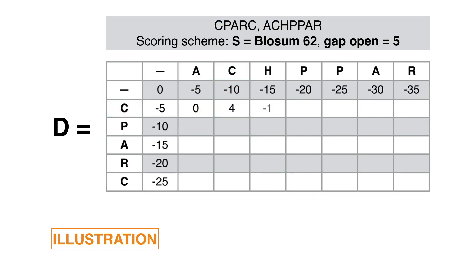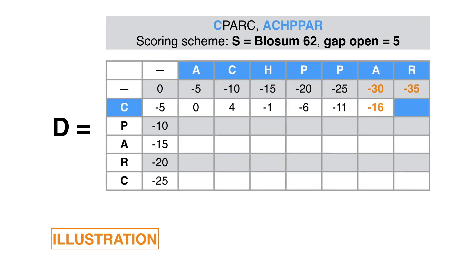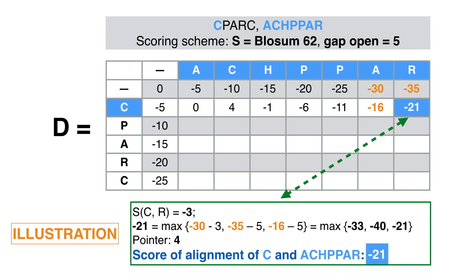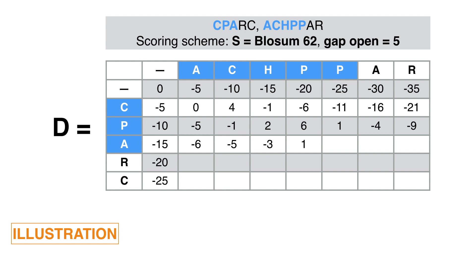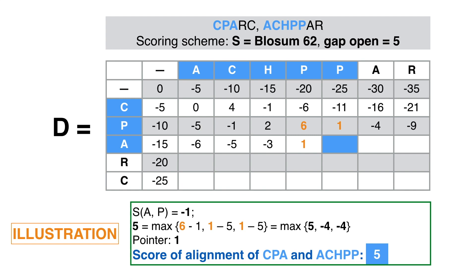We may fill D row by row or column by column. Here is the detail of the computation of the last entry in the first row. Notice that the result, -21, is the score of the alignment of the prefixes C of X and ACHPPAR of Y. At this point, the recursive formula has been applied several times. We are about to complete the fourth row of D. In this particular application of the recursive relation, we have obtained 5, which is the score of the alignment of the prefixes CPA of X and ACHPP of Y.